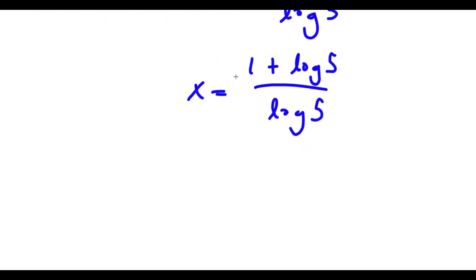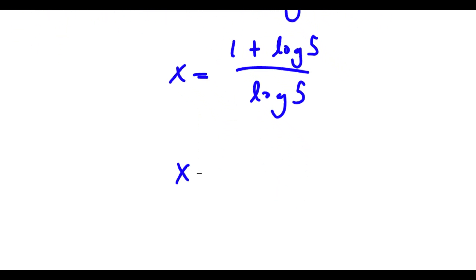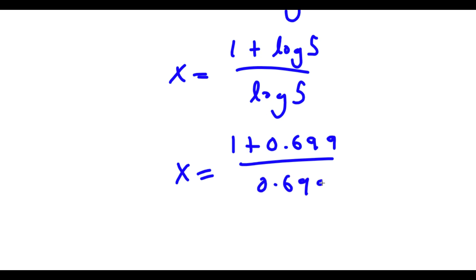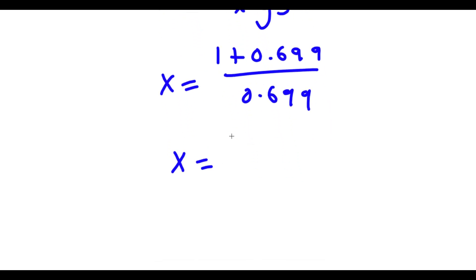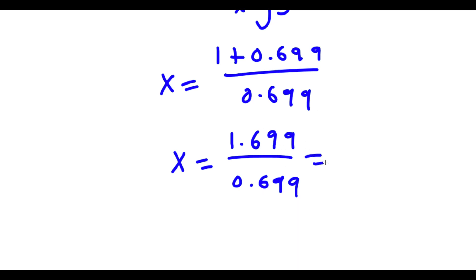Now log 5 is actually equal to 0.699. So now I have x is equal to 1 plus 0.699 over 0.699. Now 1 plus 0.699 equals 1.699. So I have 1.699 over 0.699. Dividing these two using a calculator, x is equal to 2.43. So that is our answer.